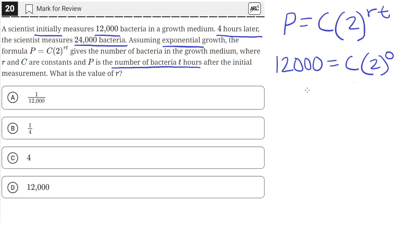So two raised to the zero is just one, so we'll just be left with C on this side, and the 12,000 will still be on this side. That means C is equal to 12,000.